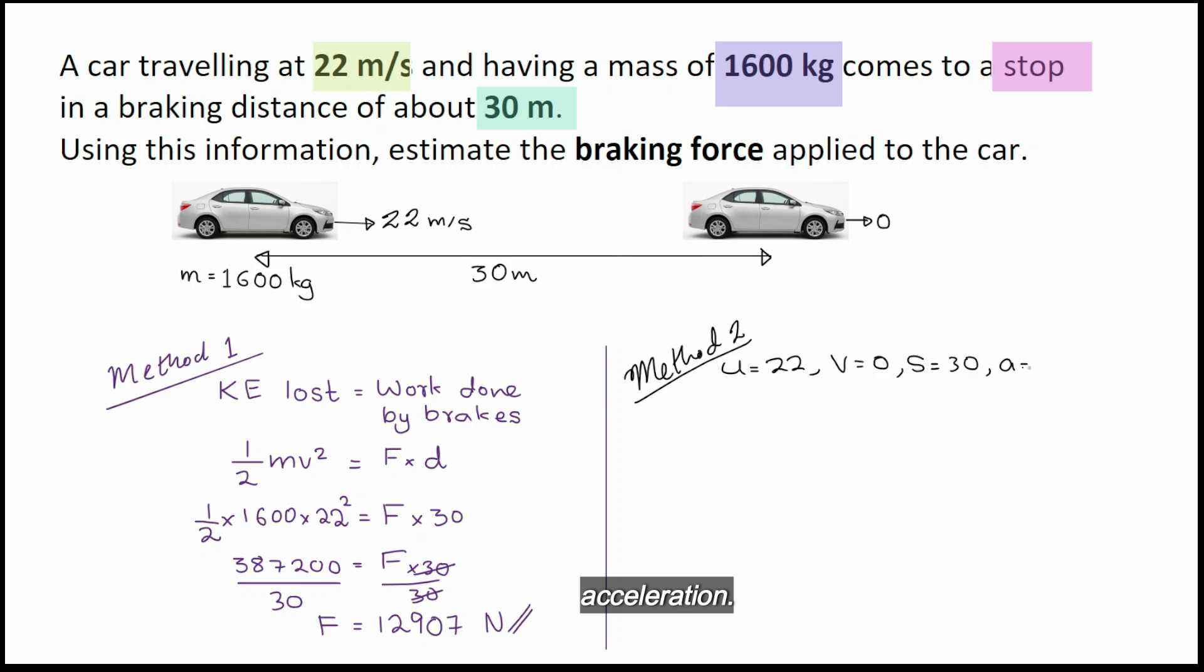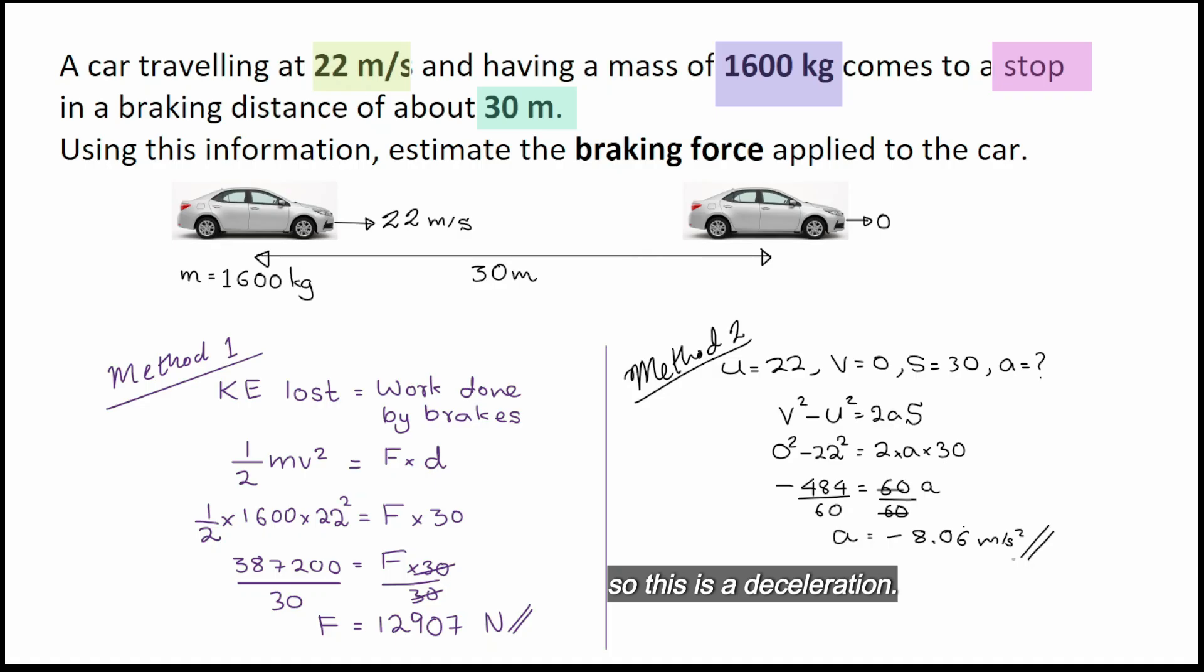We can use this formula here. Negative 484 on the left-hand side is equal to 60a. Divide by 60. So this is a deceleration. The value of deceleration is 8.06. The negative sign you don't need to worry about because it just shows that it is in the opposite direction.